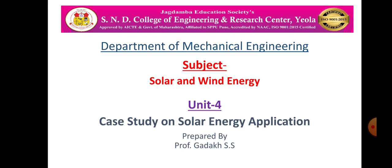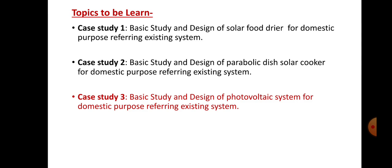From unit number 4, we are learning the case study on solar energy applications. In unit number 4, we have to study three case studies of solar energy. The first case study is related to the study and design of solar food dryers. The second case study is related to the solar parabolic dish cooker.